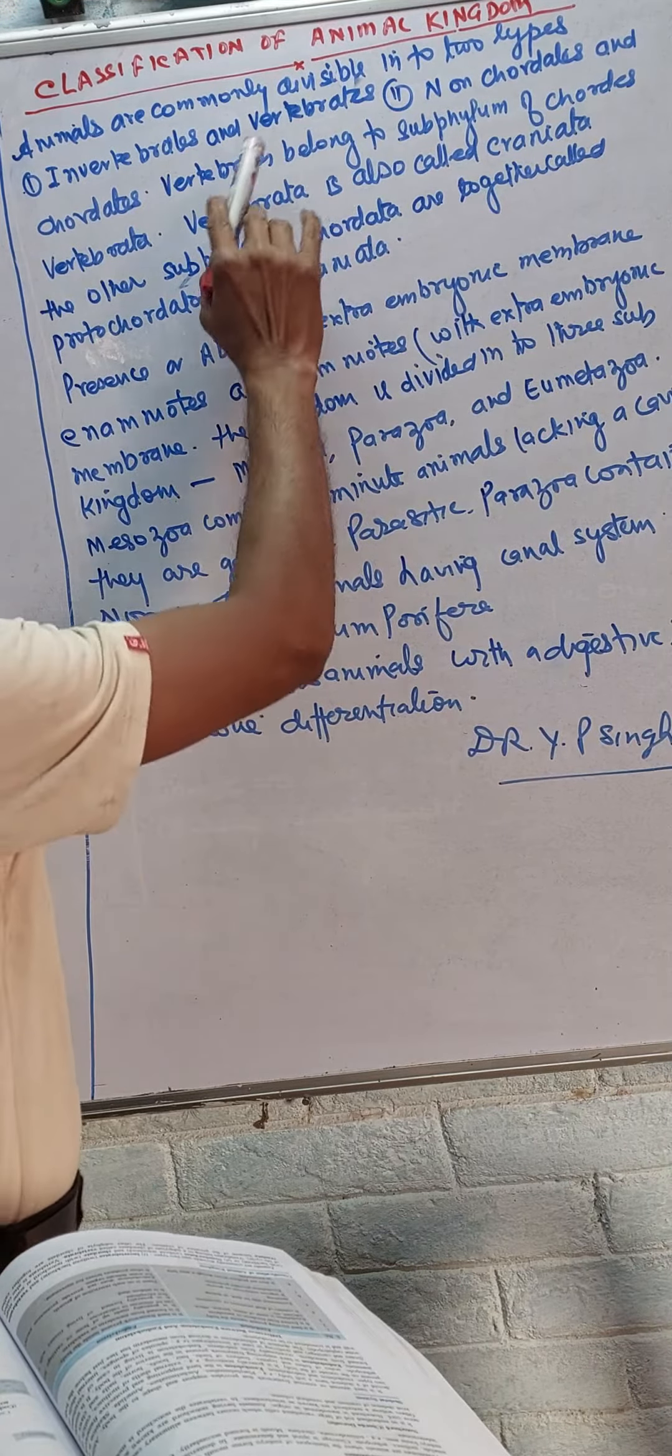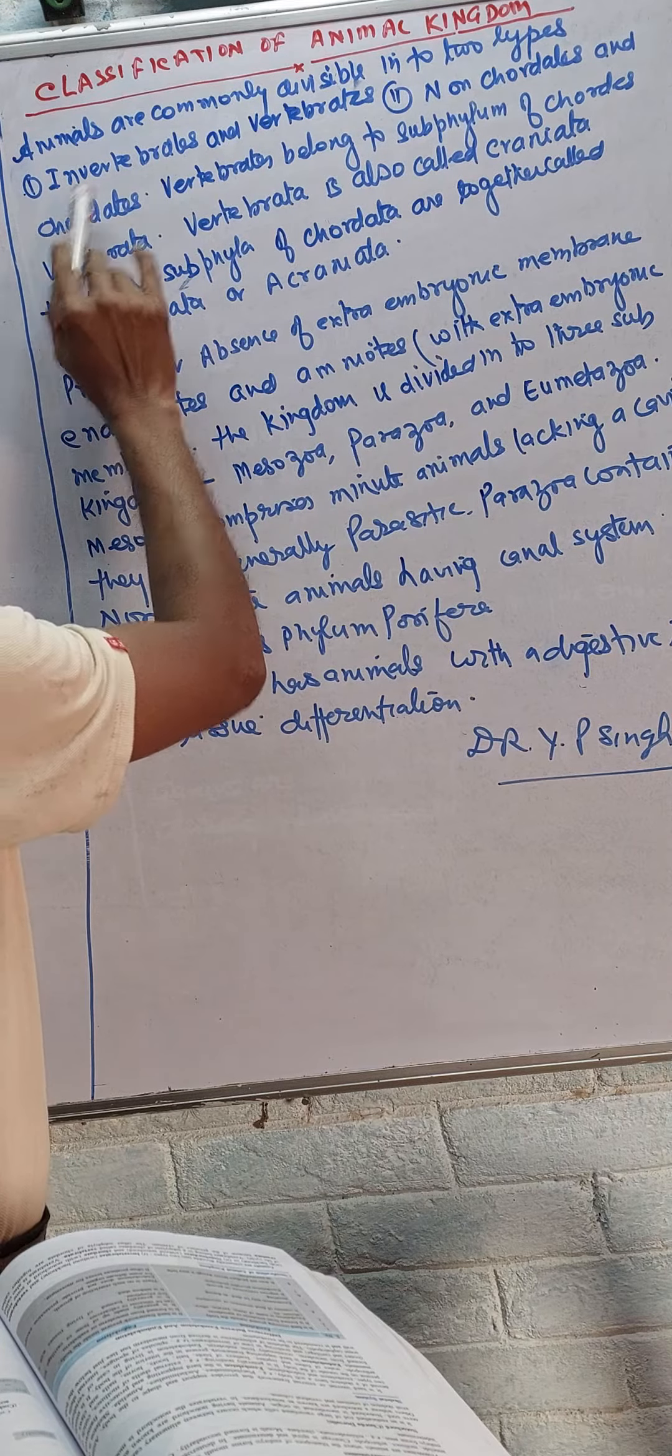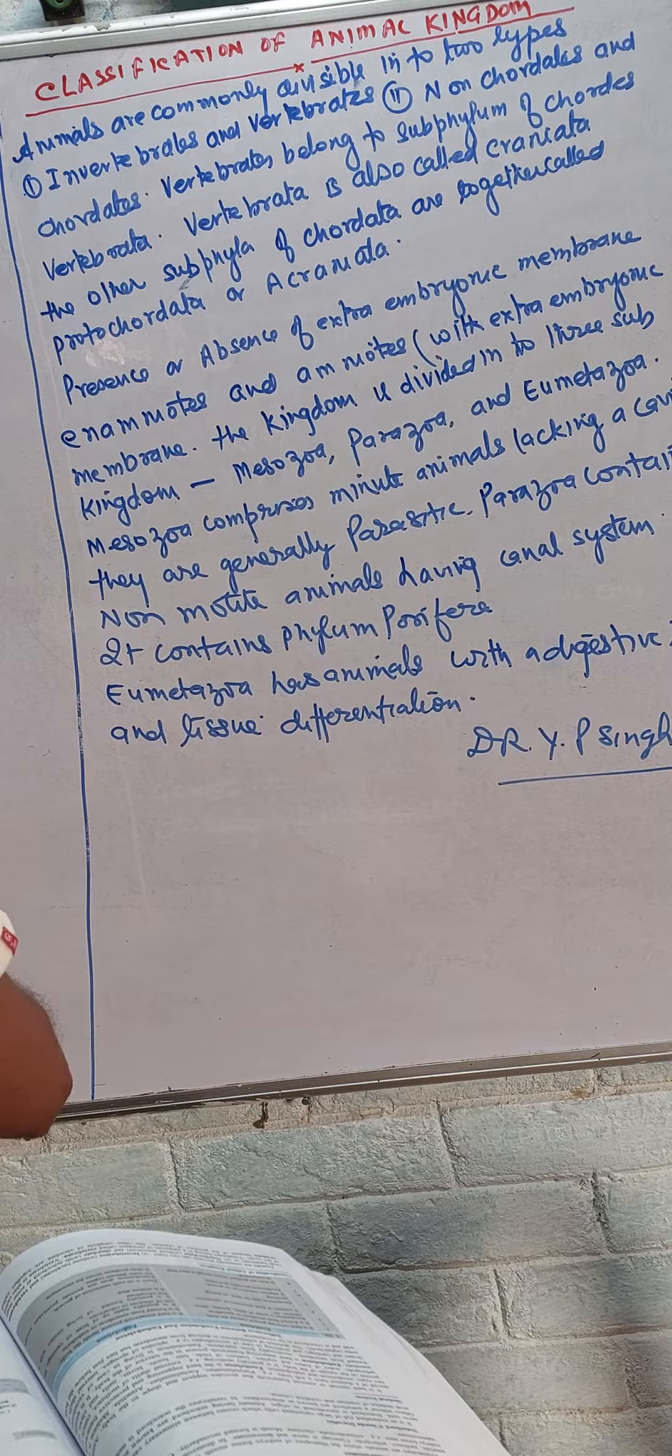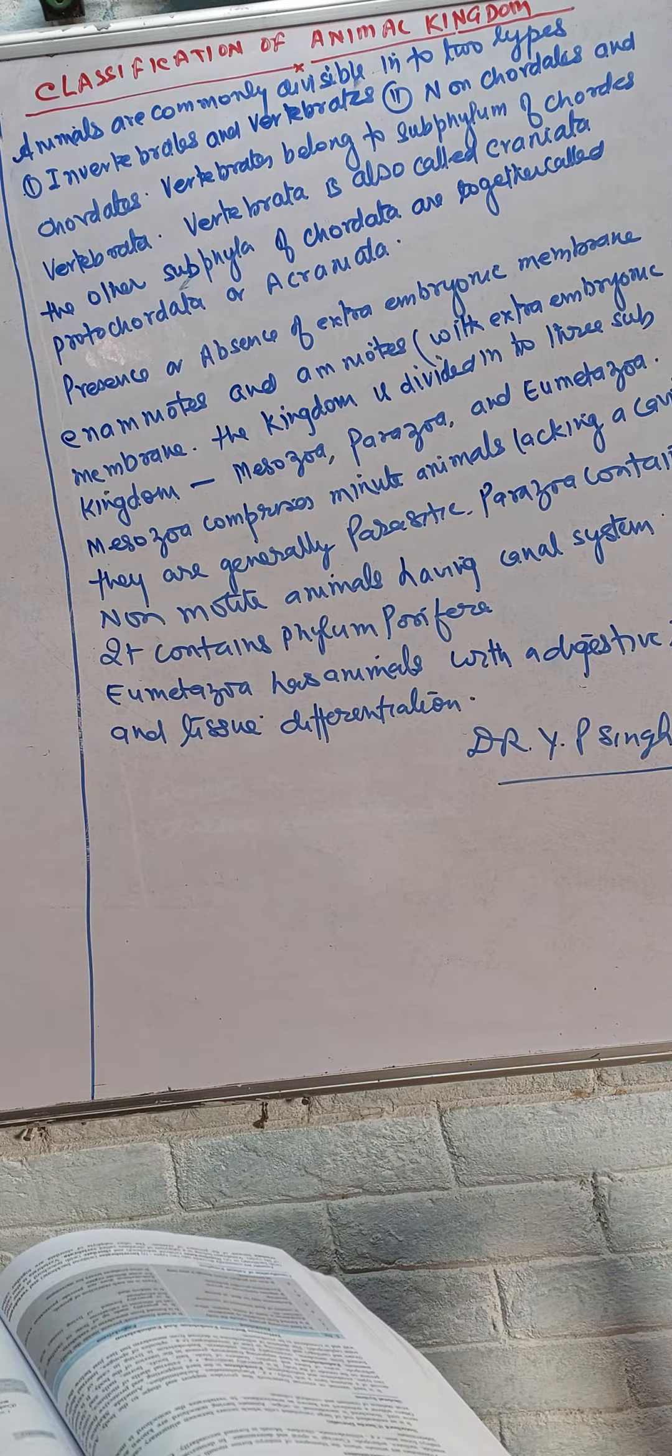Animals are commonly divisible into two types: invertebrates and vertebrates. The second type of classification is non-chordates and chordates.